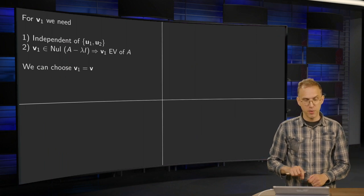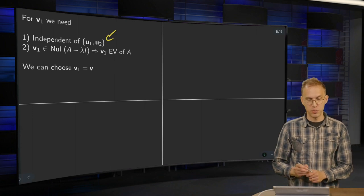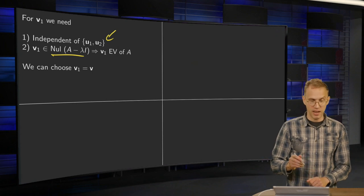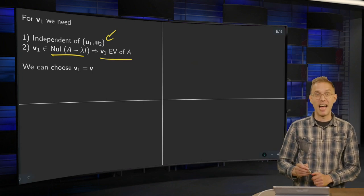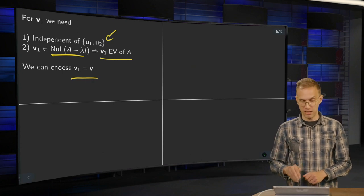And for v_1 we need that this is independent of u_1 and u_2 and it has to be in the null space of (A minus lambda I). So v_1 has to be an eigenvector of A and we can choose for example v_1 equals v. That does the job.